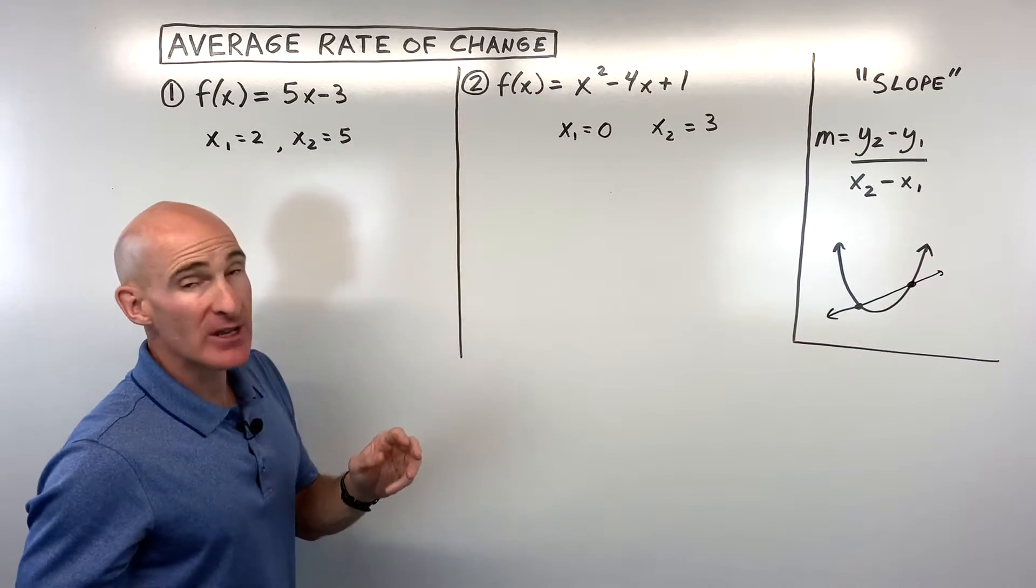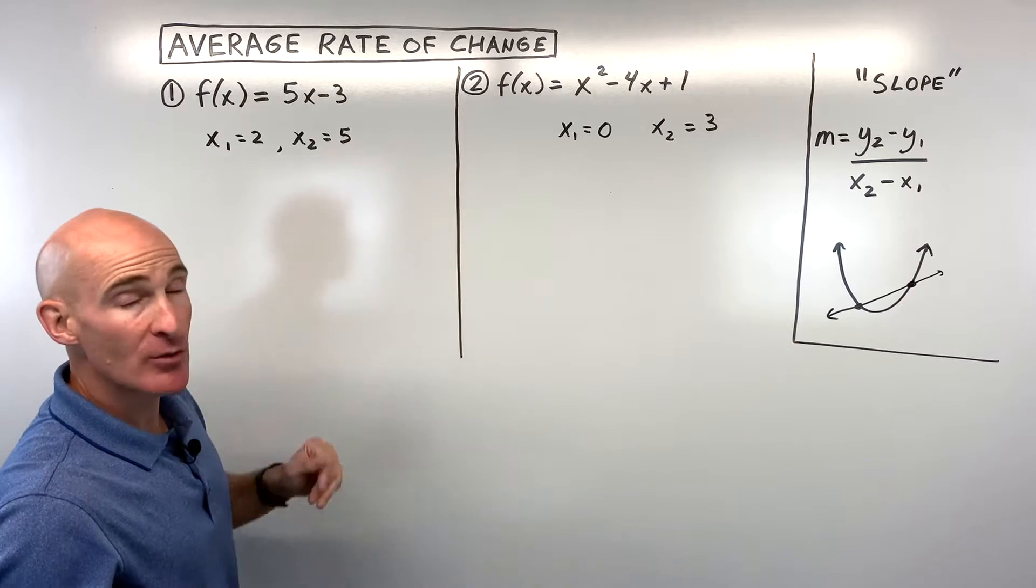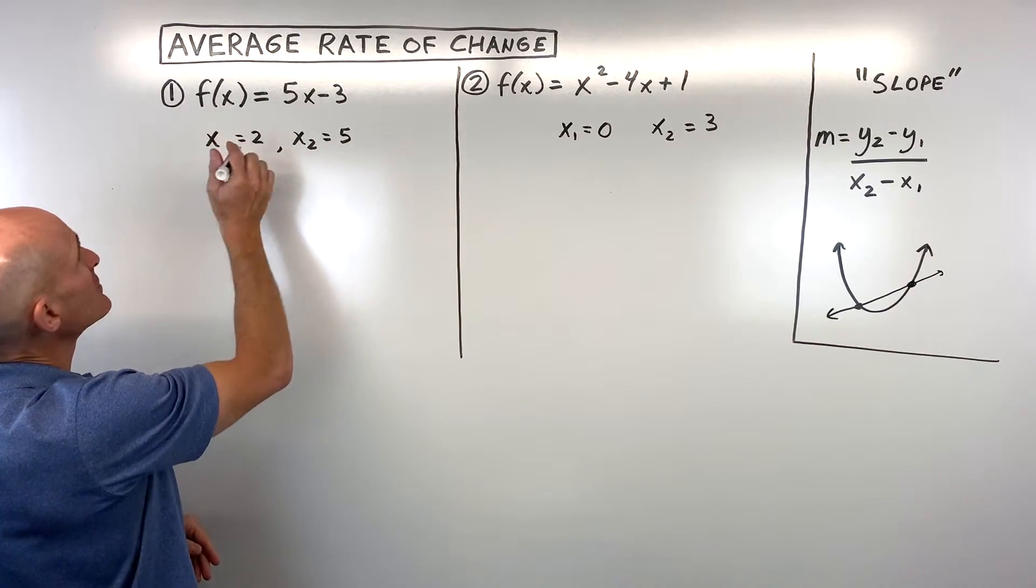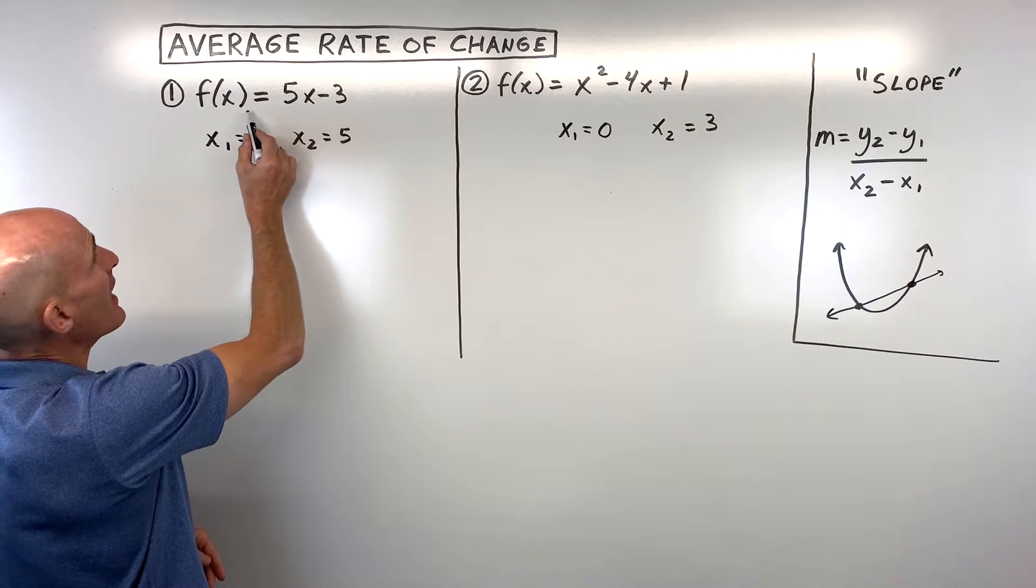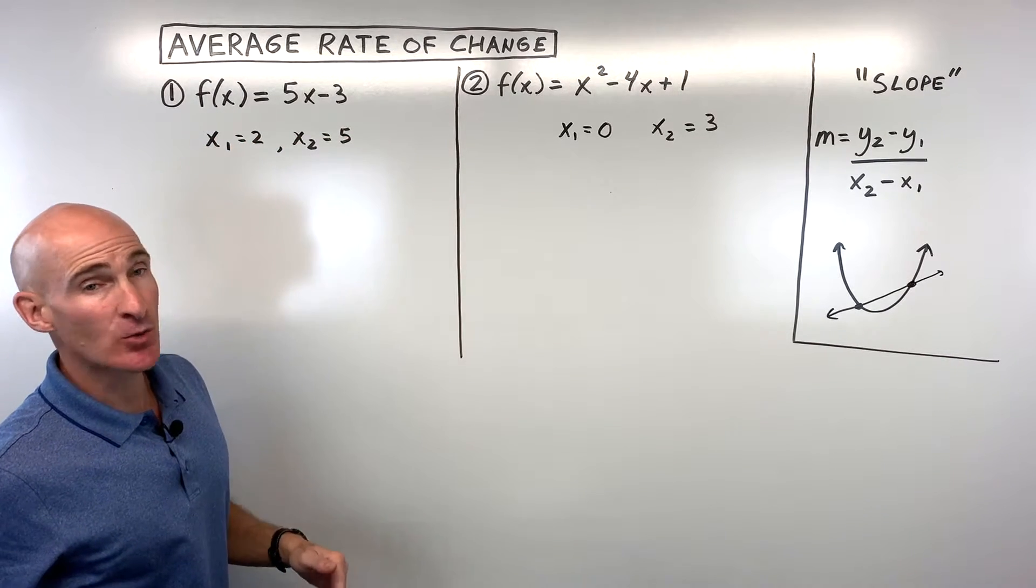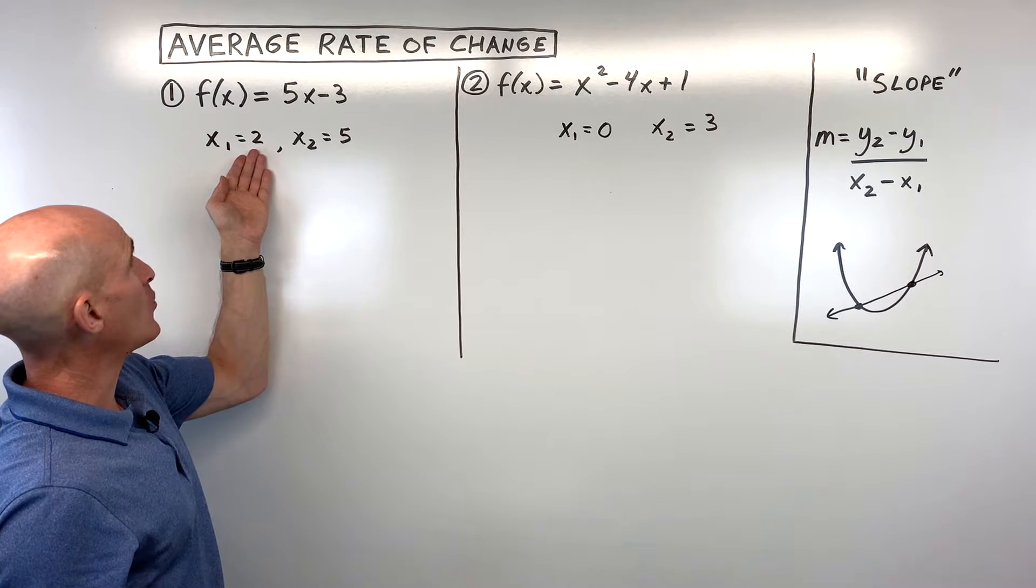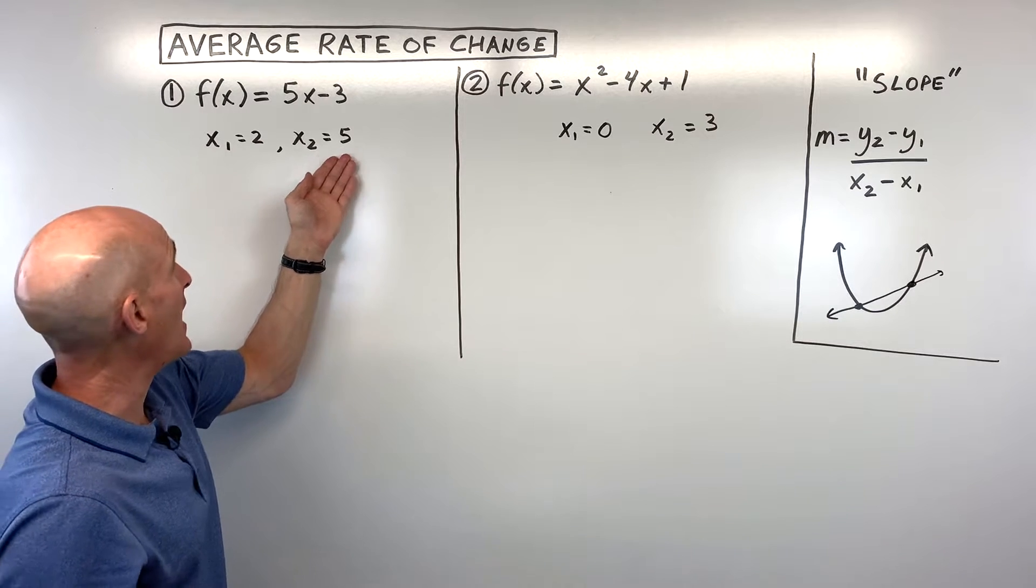So let's take a look at three examples. We'll do a couple together and you can practice one on your own or two on your own if you want. Starting with this first one, say our function is f of x equals 5x minus 3. And we want to find the average rate of change from x1, which is 2, to x2, which is 5.